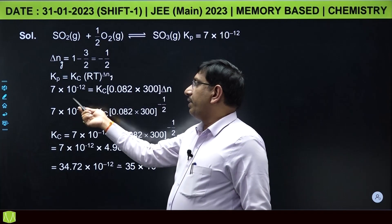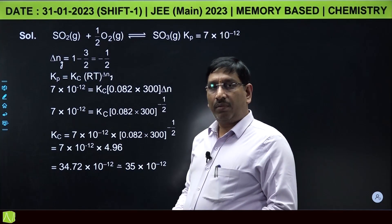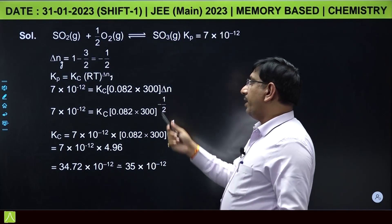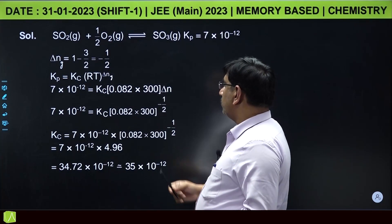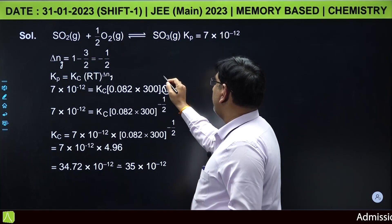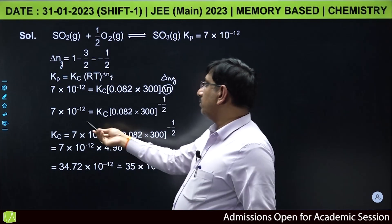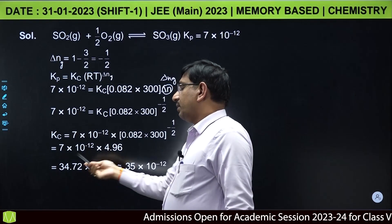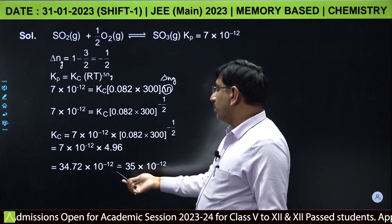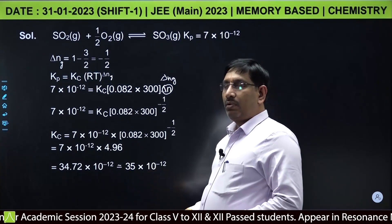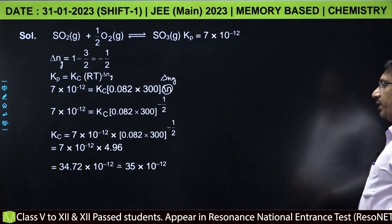Here you can substitute the data. Kp is 7 into 10 power minus 12, Kc into R value 0.082 liter atm mole inverse Kelvin inverse, and temperature is 300 Kelvin, and delta NG value is minus 1 by 2. Now if you calculate the Kc value you will get 34.72 into 10 power minus 12, and if you round off it will be 35. So the X value can be 35.